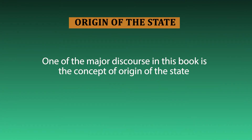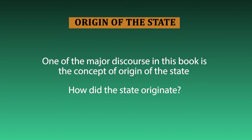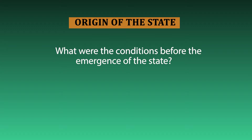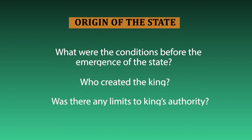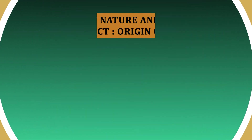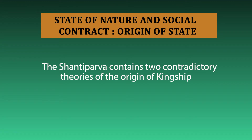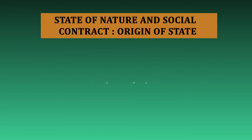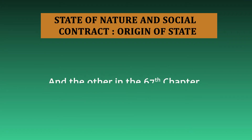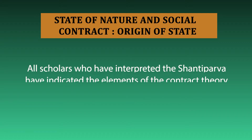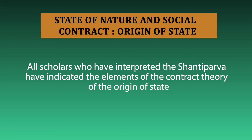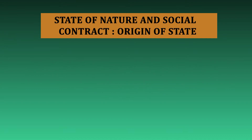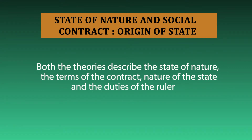One of the key elements discussed in the Shanti Parva is the origin of the state. How did the state originate? Is it a divine creation or did the people create the state? What were the conditions before the emergence of the state? Was there any limit to the authority of the king? The Shanti Parva contains two contradictory theories of the origin of the state — one in the 59th chapter and the second in the 67th chapter. Both theories describe the state of nature, the terms of the contract, the duties of the king, as well as the nature of the state.